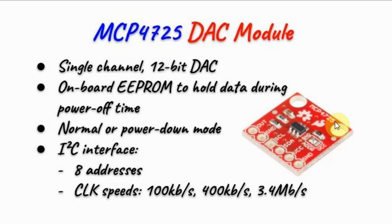The DAC module contains IC-MCP4725, which is a single-channel 12-bit digital to analog converter. It has an onboard EEPROM which holds data during power-off time. We can operate the chip in normal or power-down mode. It is connected to a microcontroller using I2C, and we can connect up to eight of these devices, and we can operate this in variable clock speeds from 100 kilobits per second to maximum 3.4 megabits per second.